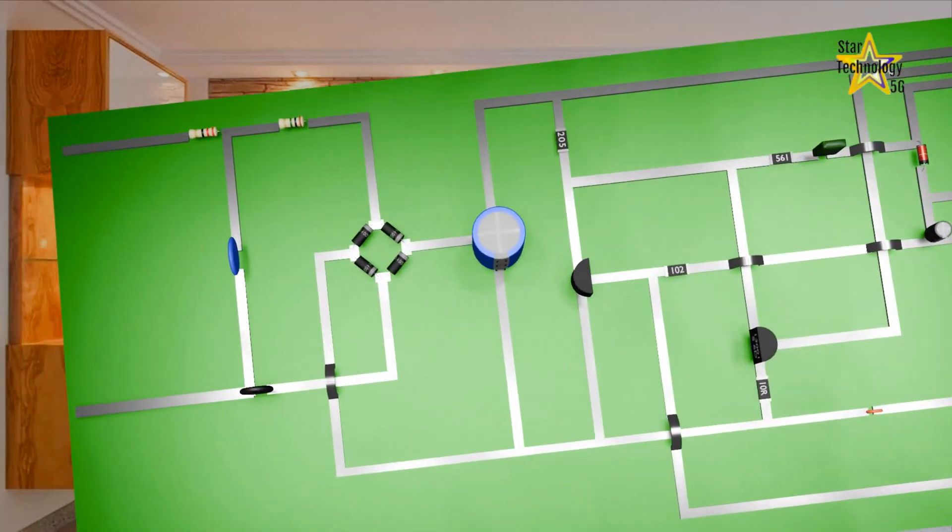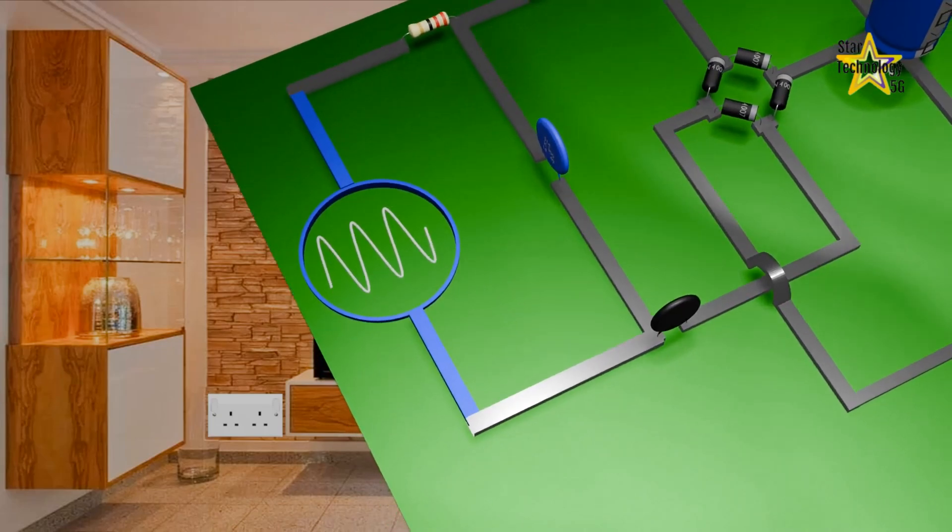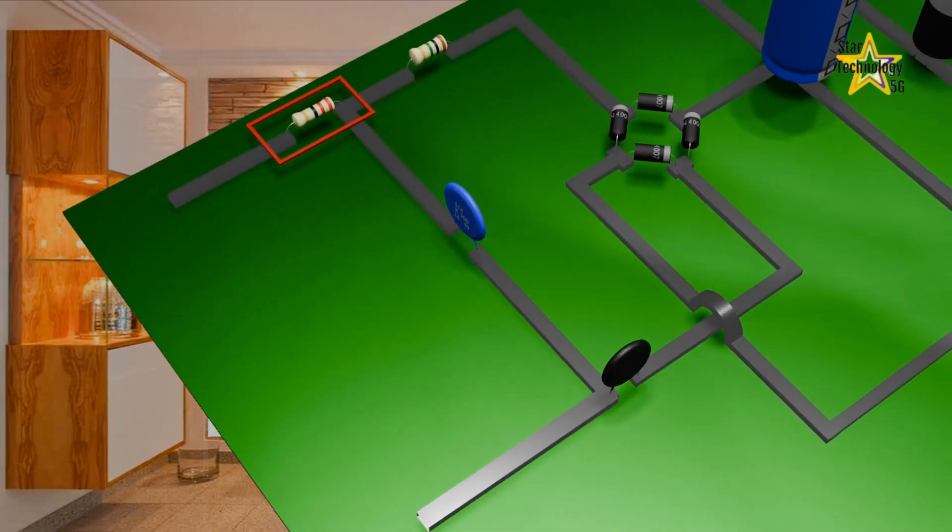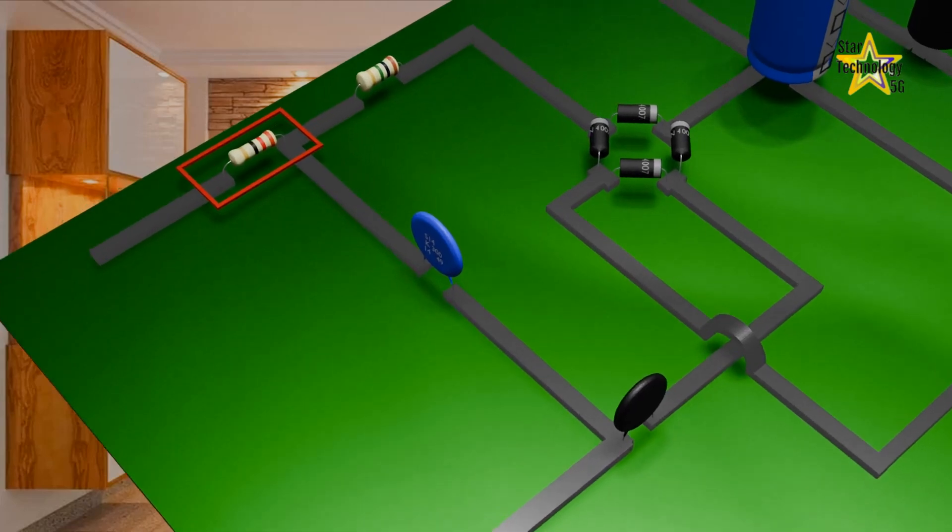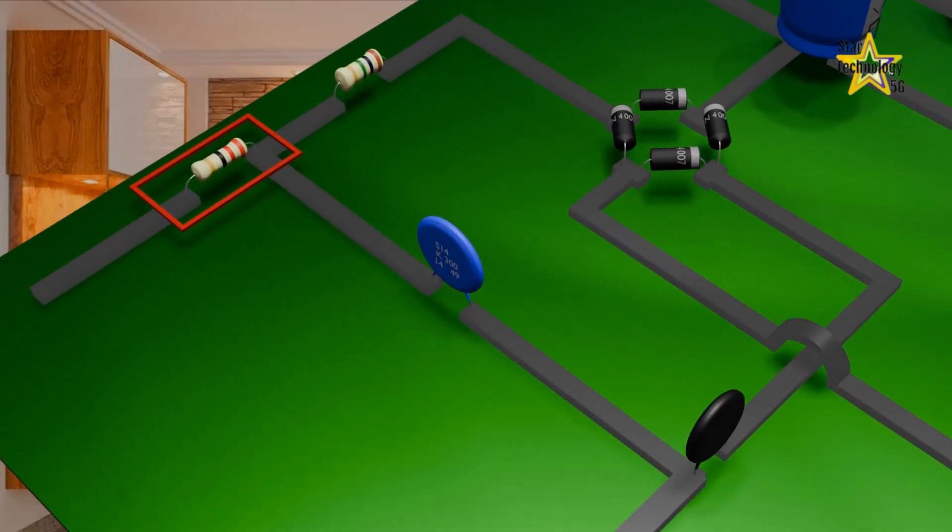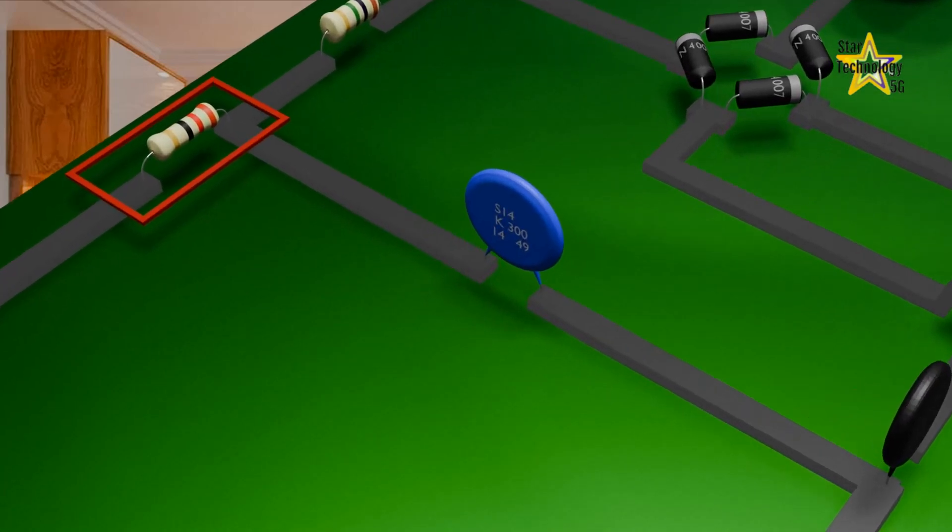These two wires are phase and neutral for input supply. First, we have a resistor. We can see it is a 22 ohm resistor. This is a fusible resistor that prevents damage from overloading.